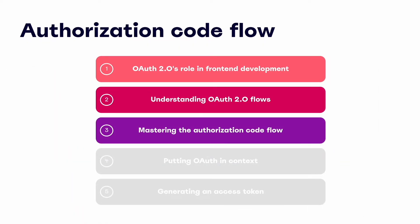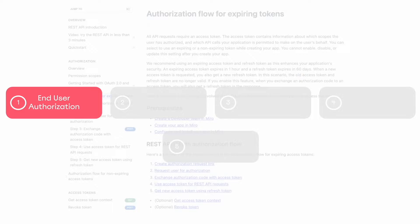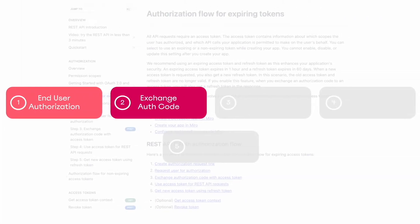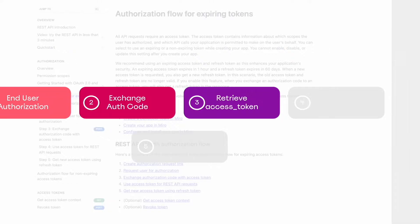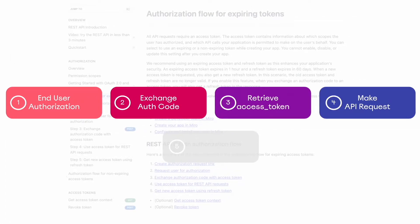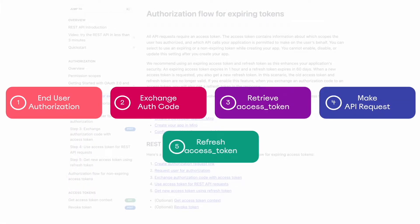Now it's time to start mastering the authorization code flow. First, end users will need to authorize your application. Next, an authorization code will be exchanged for an access token. We'll retrieve an access token and refresh token pair, which will enable us to make an API request to one of the resource owner's APIs. Lastly, we can request a new access token using the refresh token returned in step 3.